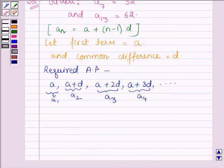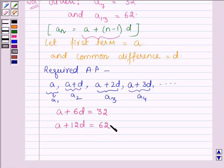Now, we are given that the 7th term of AP is 32. So, by using this formula, we have A plus 6D is equal to 32 and the 13th term is 62. So, this implies A plus 12D is equal to 62. Let this be equation number 1 and this be equation number 2.